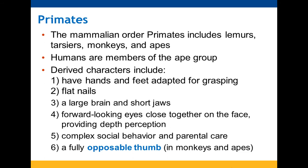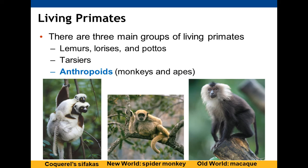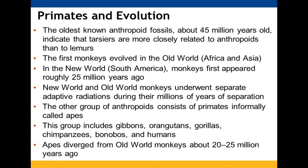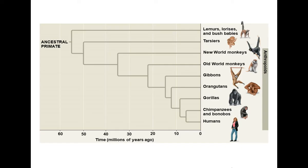Primates are the order we focus on, including lemurs, prosimians, monkeys, and apes — humans are part of the ape group. Derived characters of primates include grasping hands and feet adapted for climbing trees, flat nails, large brains, short snouts, and forward-facing eyes to help with depth perception. There are three major primate groups: lemurs, tarsiers, and anthropoids — monkeys and apes. The oldest known anthropoid fossils are about 45 million years old. Monkeys appeared in Africa, Asia, and South America. Apes include gibbons, orangutans, gorillas, chimpanzees, and humans.